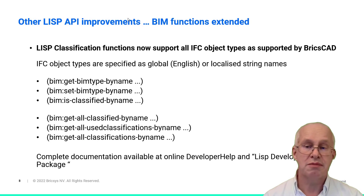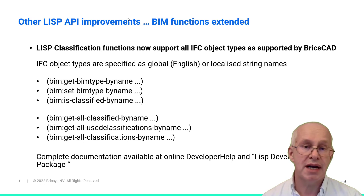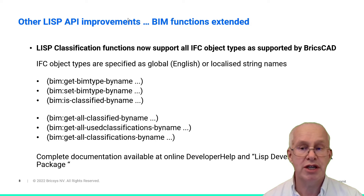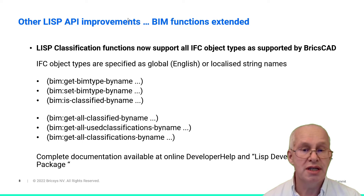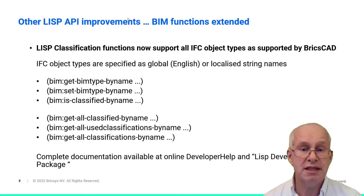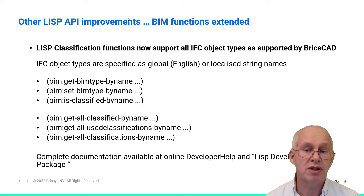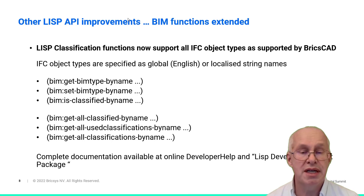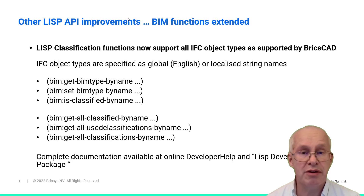Now for some important improvements to the BIM interface. Besides BIM type classification based on predefined enumerations, a new function set allows classification based on the type string name. This significantly extends the capabilities — namely to use all supported IFC object types. The new function set supports all typical query, edit, and assignment functions.